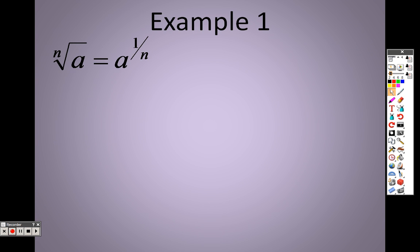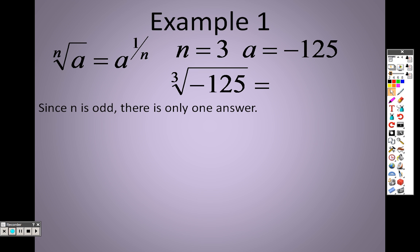So taking a look here at example 1, all right, we know how to rewrite them now. If I told you that n equals 3 and a is negative 125, basically what we're saying is, can you think of a number that when you multiply it 3 straight times will give you negative 125 and it has to be the same number, so you've got to keep that in mind. Since n is odd, there is only one answer, right? If it was a square root or the 4th root, that would be different. We'd have plus or minus, but because it's cube root, there's only one answer. There's only one thing that works in this problem.